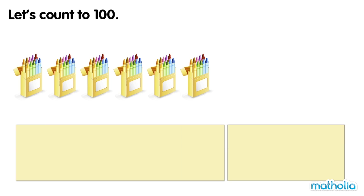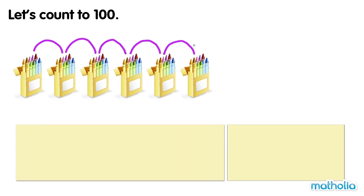There are 6 boxes of crayons. How many crayons are there? 10, 20, 30, 40, 50, 60. There are 60 crayons. 6 tens equals 60.